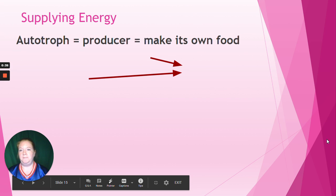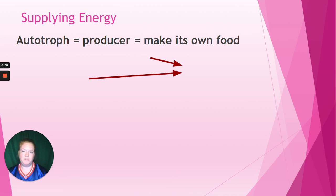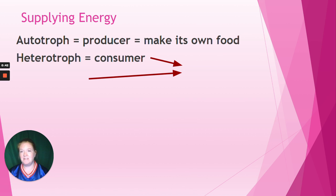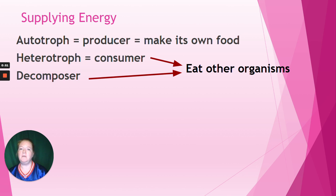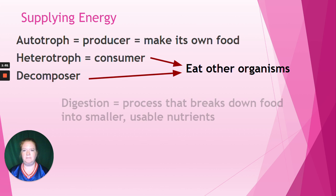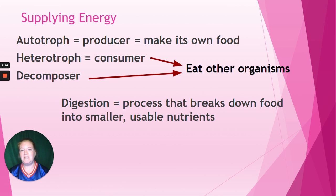An autotroph — remember, that's a producer — they make their own food. Primarily that's plants, but also some bacteria and some algae. And then we have heterotrophs, which are consumers, and decomposers, which are also consumers. Both heterotrophs and decomposers eat other organisms — decomposers decompose them — but they still require another organism to get their energy. Digestion is the process that breaks down food into smaller usable nutrients, stuff we need in order to survive and get energy.